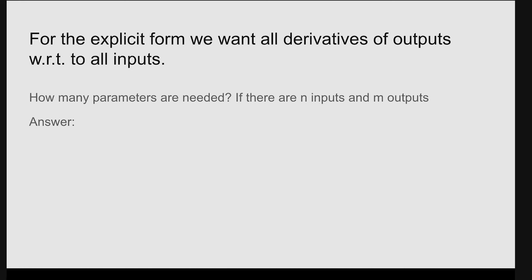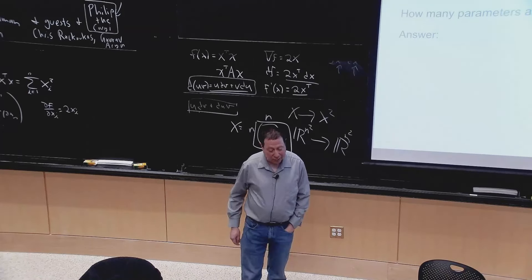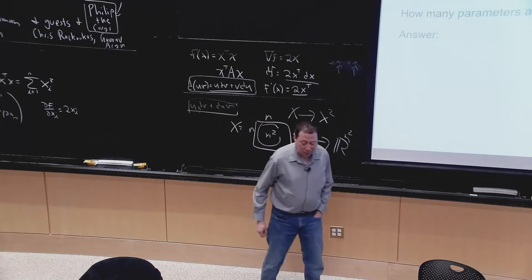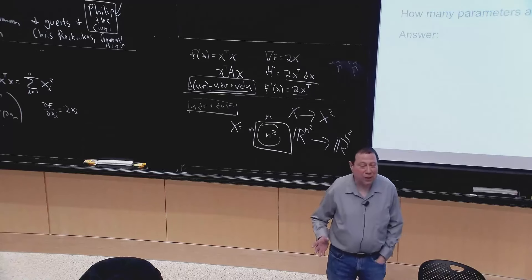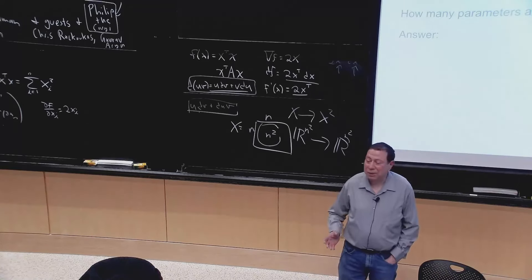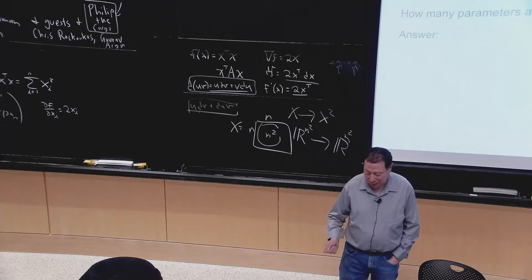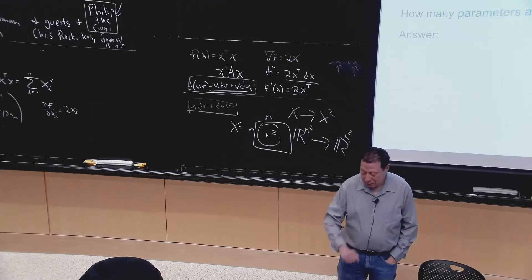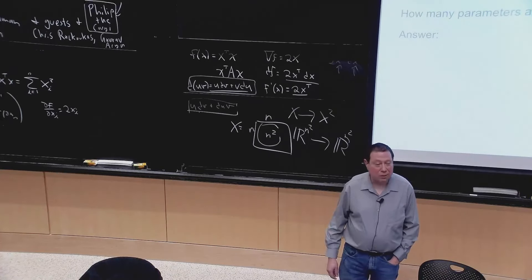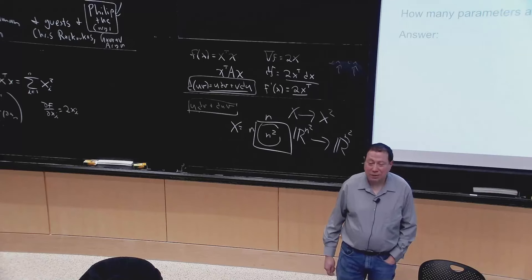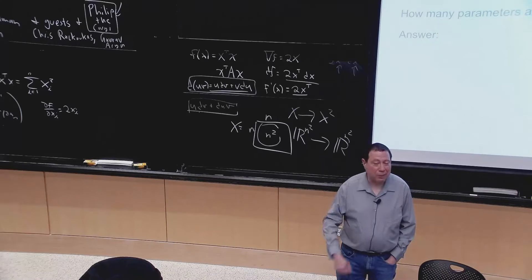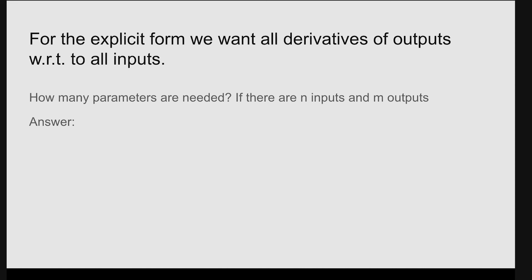Sometimes it's good to count how many numbers are needed to express an answer. If I have a function that takes n inputs to m outputs and I want to express the derivative as a matrix, how many numbers do I need? m times n — an m by n matrix.